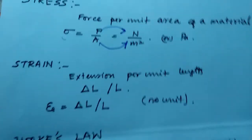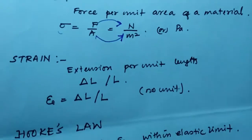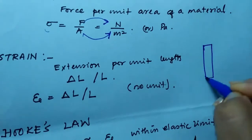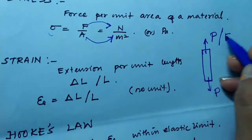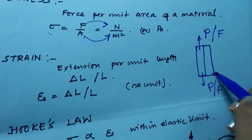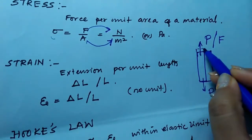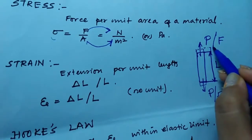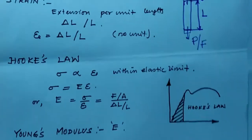What do you mean by strain? Strain is the ratio between the change in length by the original length. Imagine there is a bar — on both sides a tensile force P or F is applied. The original length is L, and when it gets extended there is some change in length. That change in length divided by the original length gives the meaning of strain, which has no units.